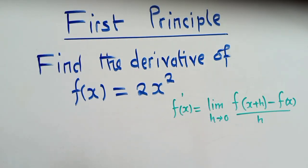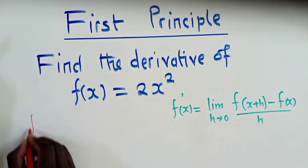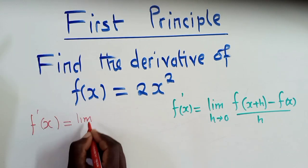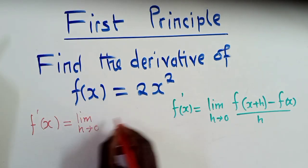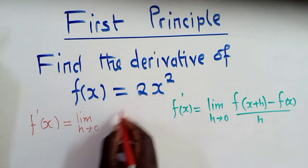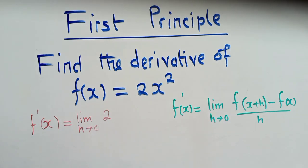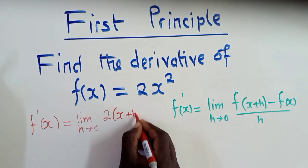So let me just try to substitute and see how it will look like. So we're going to have f'(x) is equal to limit as h approaches 0. And here, we said we're going to put a 2. We substitute a 2 where f is. And this is a 2. And copy what we have here, x plus h.